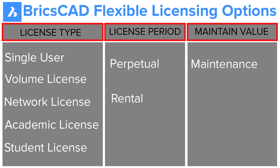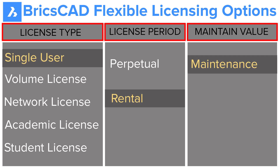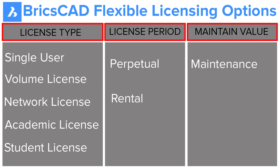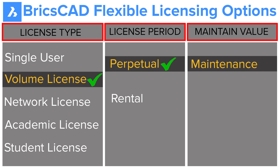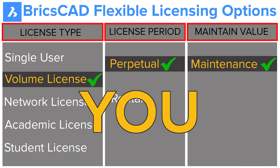So that's all about the various licensing options in BricsCAD. When it comes to licensing, you have tremendous freedom of choice. For example, if you want to do a project for a year and use BricsCAD to design and implement it, you can go for a single user license on a rental basis and you will also get maintenance free. Or if you own an organization with a few employees and want to use BricsCAD as your design solution, you can go for volume licensing on a perpetual basis with free maintenance for one year, which can be renewed later.